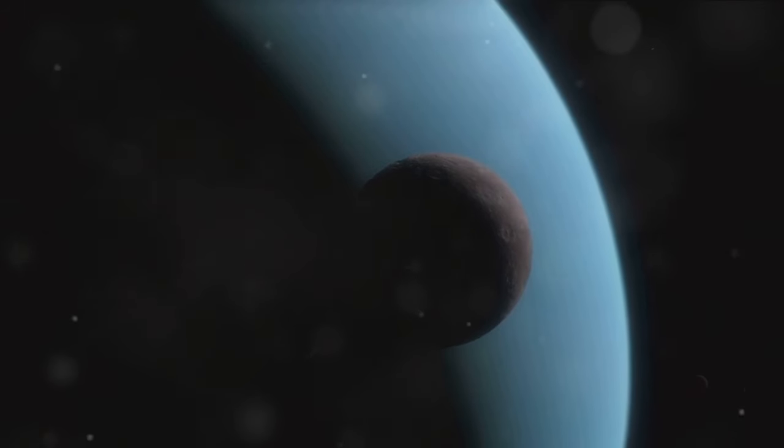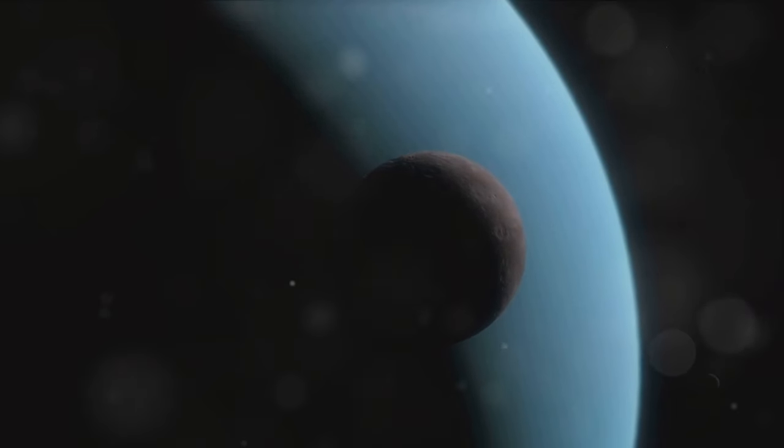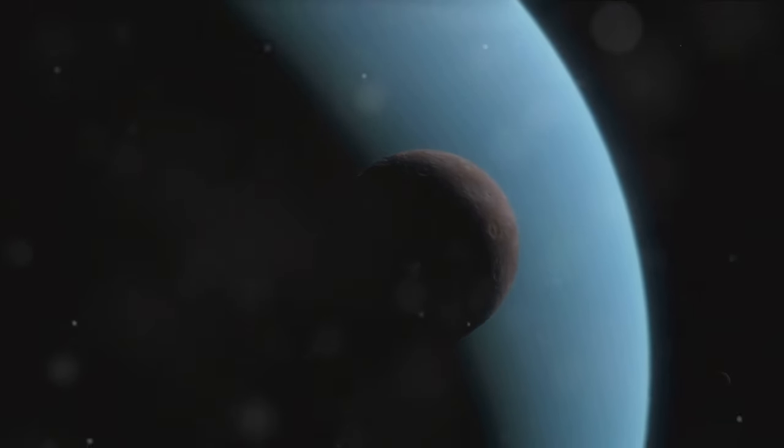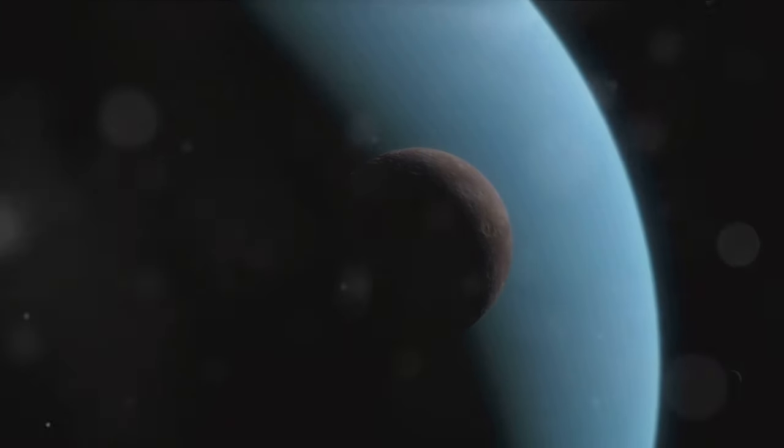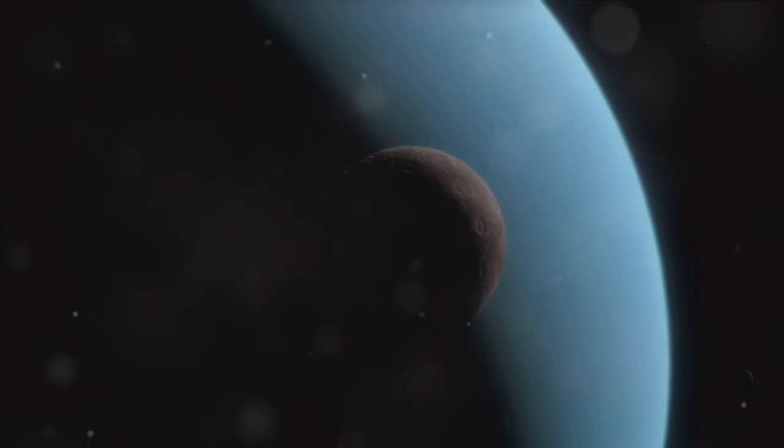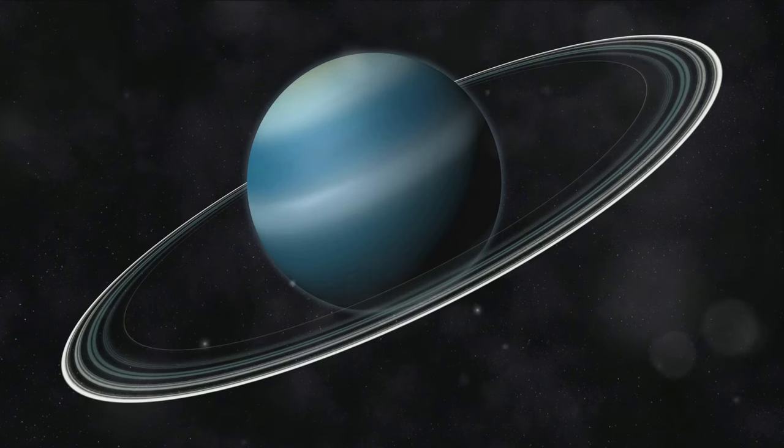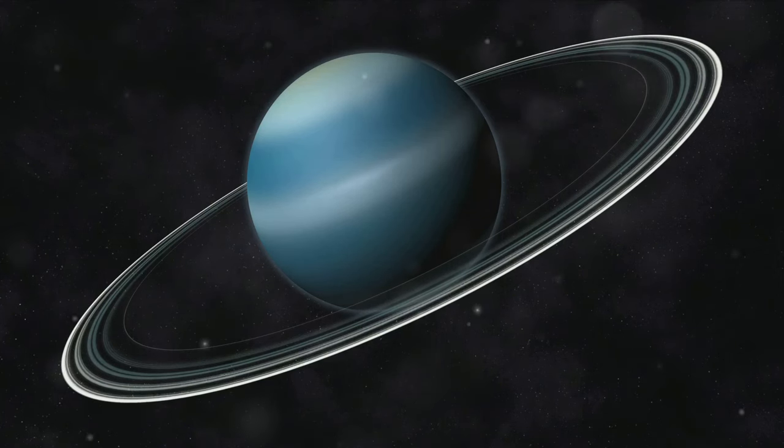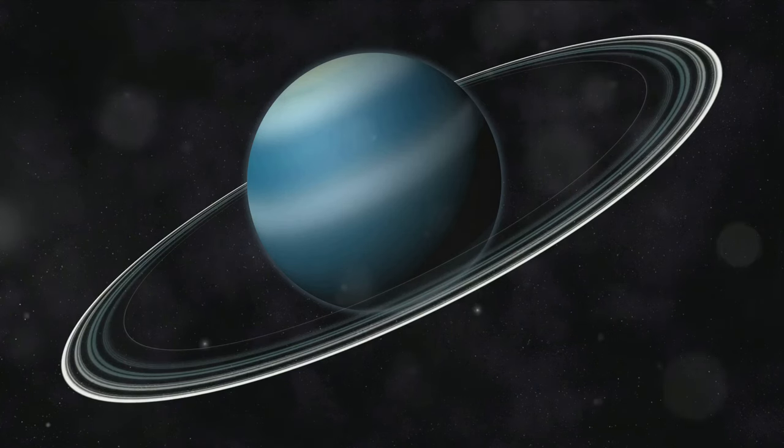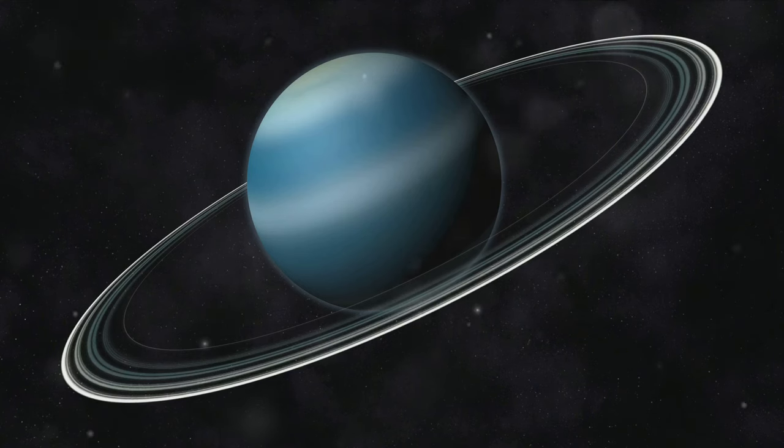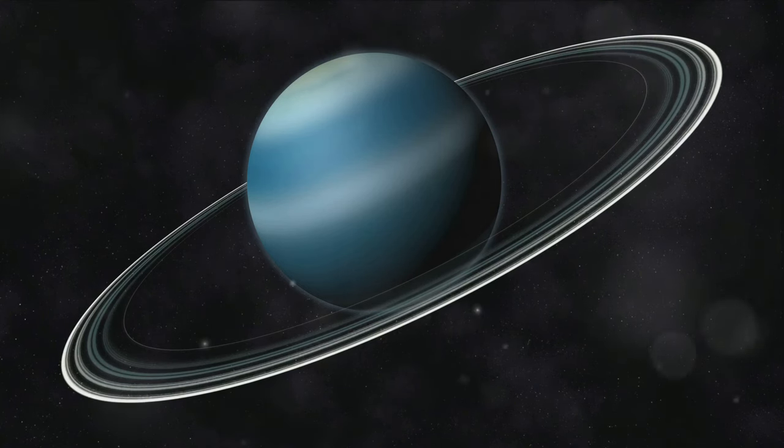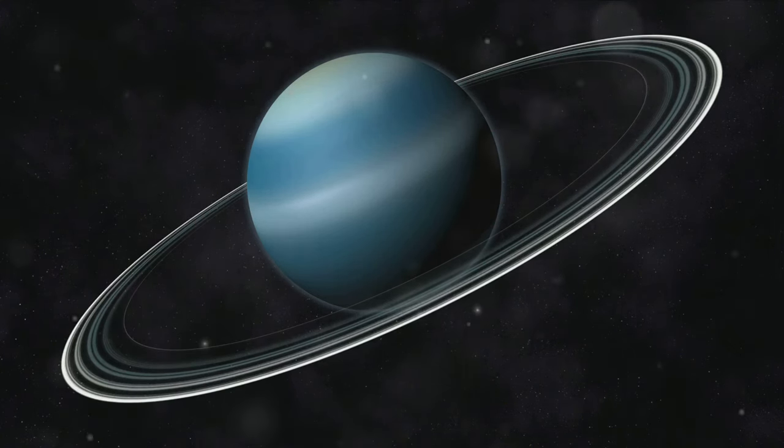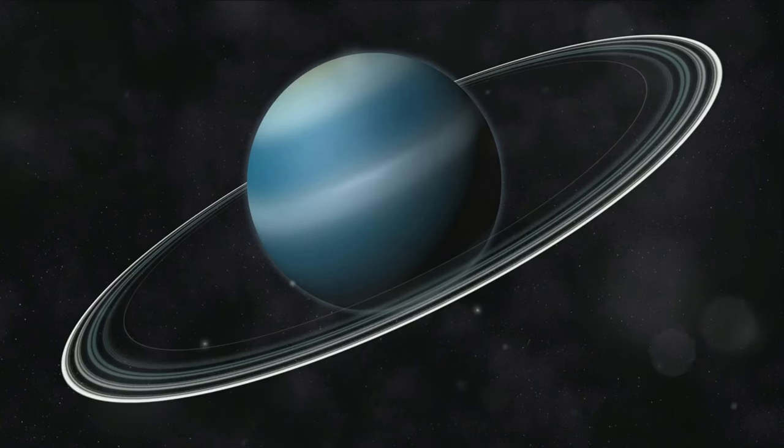What sets Uranus apart from the rest is its unique feature, its axial tilt. Most planets rotate like a spinning top, but not Uranus. In its celestial singularity, it rotates on its side. This is a rather unusual phenomenon among the planets in our solar system. Imagine a planet with its vast size and grandeur rolling around its orbit like a colossal ball. The thought is almost surreal.